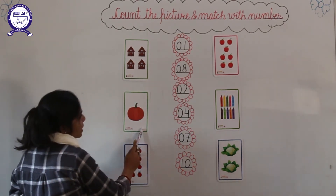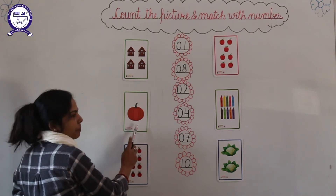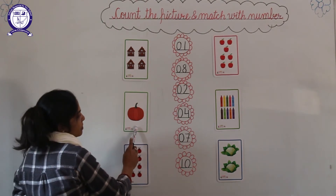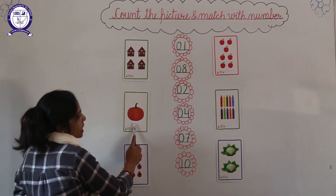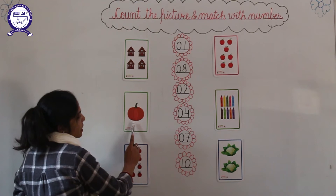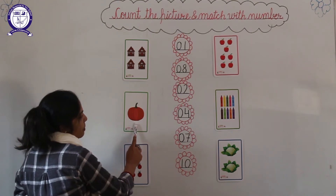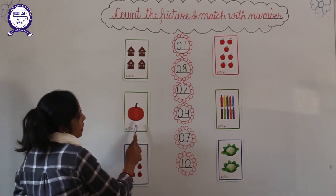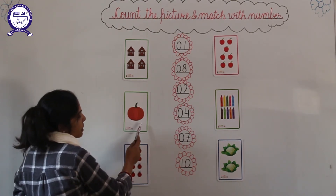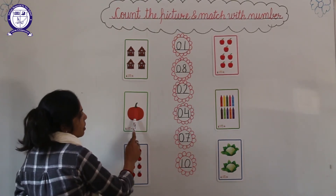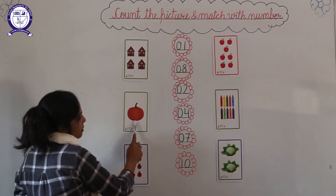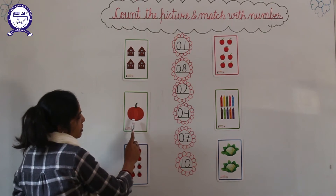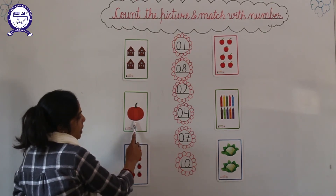Next picture — which picture is this? Pumpkin. This is a pumpkin. And how many pumpkins are there? 1. There is 1 pumpkin.